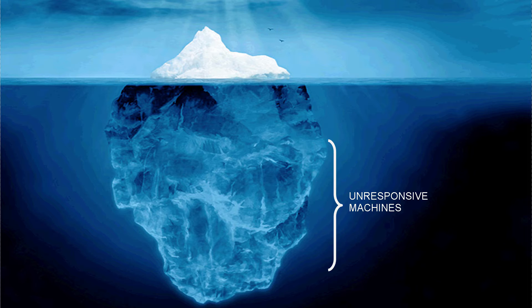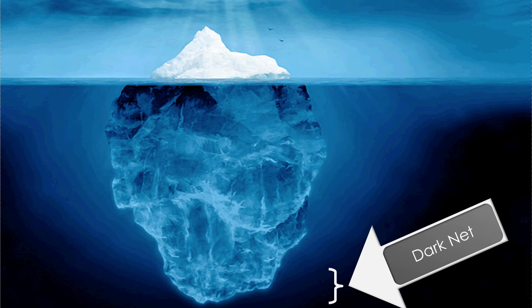The next chunk of this iceberg is unresponsive machines — systems that are online and on the web, but you can't access them. They serve a specific purpose: everything from a printer to a file server to an ATM machine. An ATM needs to communicate back to the bank to check whether you have money, but it doesn't make sense that you'd be able to access that ATM from your computer. And the very bottom piece of this iceberg is the dark net — this is where a lot of strange things happen.